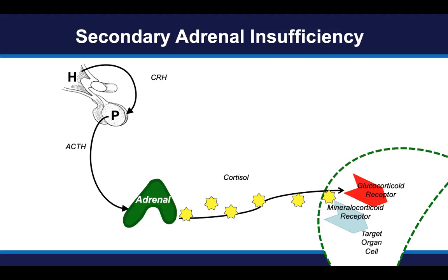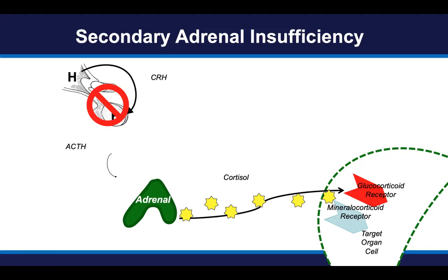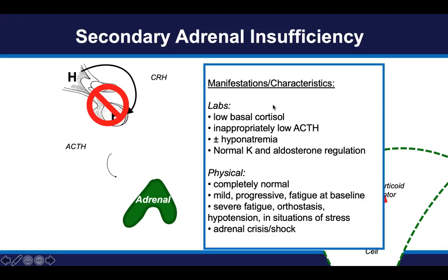Here is the pathophysiology of secondary adrenal insufficiency. There is some problem in the hypothalamus and/or pituitary that results in insufficient or deficient production of ACTH, such that even though the adrenal glands are fine and the adrenal cortex is not injured, it is not receiving a stimulus from ACTH, and as a result there is deficient production of cortisol. The key laboratory manifestations are a low morning cortisol and an inappropriately low ACTH. This is in contrast to primary adrenal insufficiency, where in response to a low morning cortisol there is a very high and robust ACTH production. Here in secondary adrenal insufficiency, both cortisol and ACTH production are low.